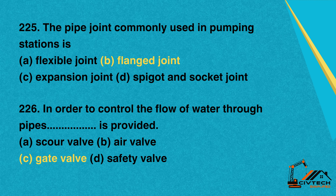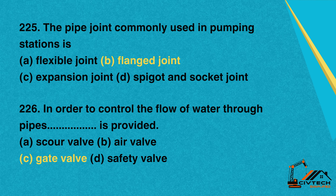Question 226: In order to control the flow of water through pipes, which valve is provided? A. Scour valve. B. Air valve. C. Gate valve. D. Safety valve. Correct option: C. Gate valve.